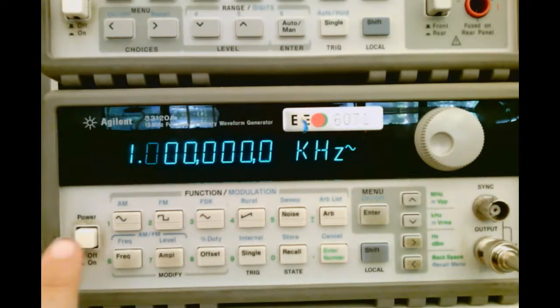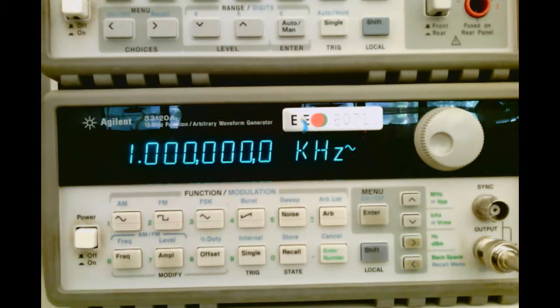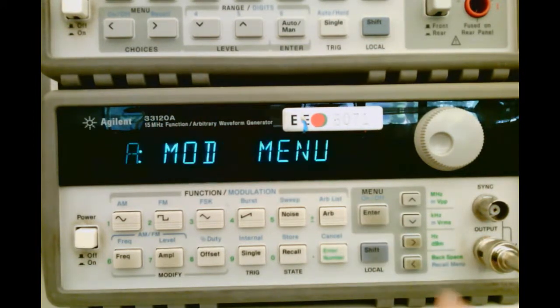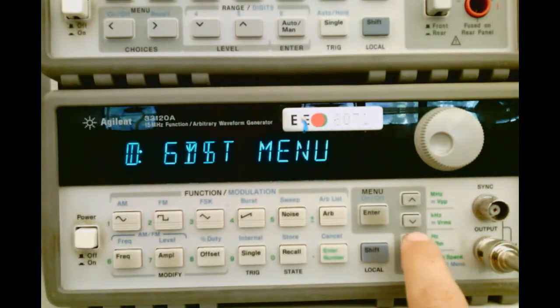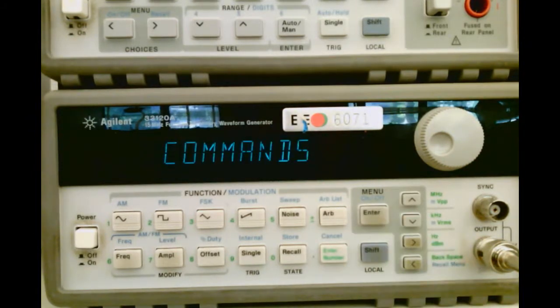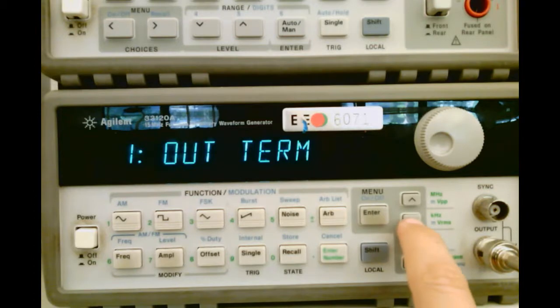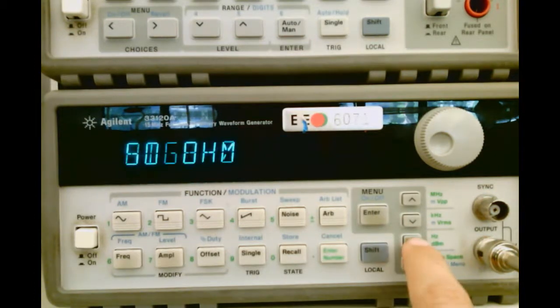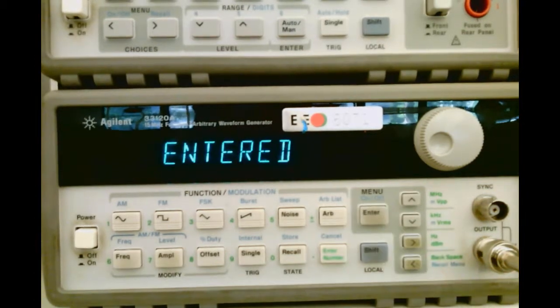After you turn the function generator on with the power button, the first thing you'll want to do is change the output mode to high Z, or high impedance, unless you are using a specific 50 ohm load for your circuit. To change the output mode, go to Shift-Enter for the menus, use the right arrow to go to the D menu, down to go into it, down to go into the out term, over to select high Z, and enter to enter it in.